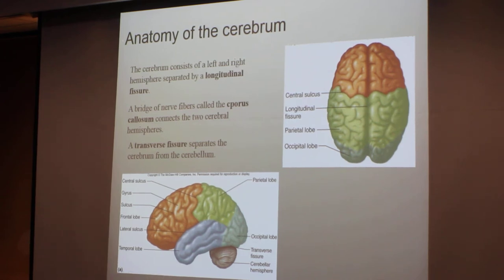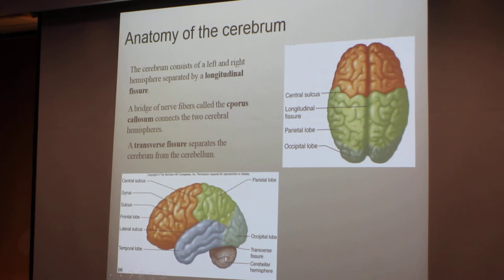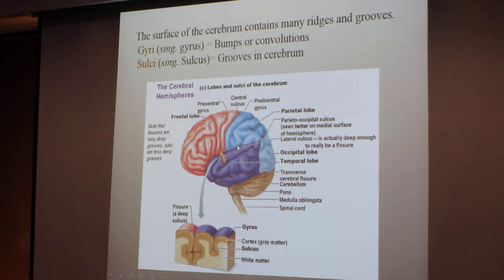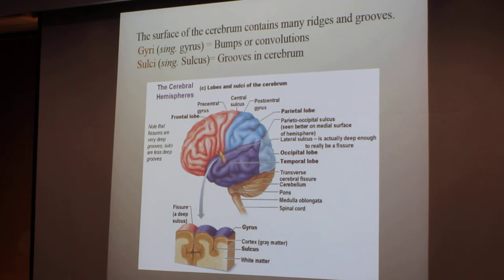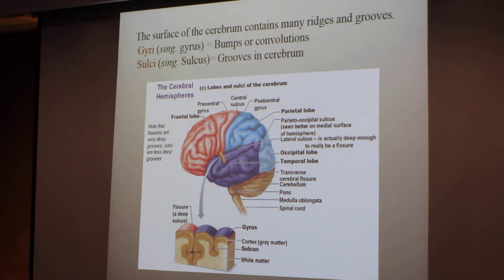The transverse fissure separates the cerebrum from the cerebellum, as you see here. This is the cerebrum here. A sulcus is usually the deepest part, and a gyrus is like the ridges, or the convolutions, or the folds of the cerebrum.